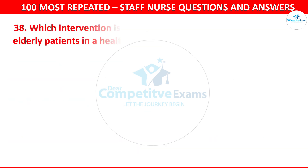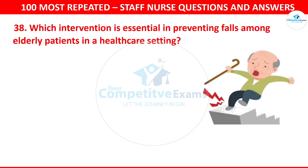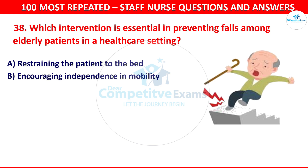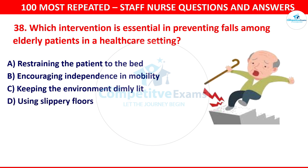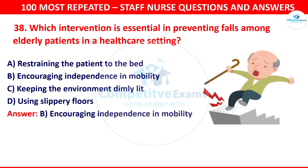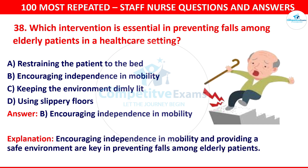Question number 38: Which intervention is essential in preventing falls among elderly patients in a healthcare setting? Options are restraining the patients to the bed, encouraging independence in mobility, keeping the environment dimly lit, or using slippery floors. The correct answer is encouraging independence in mobility. Encouraging independence in mobility and providing a safe environment are key in preventing falls among elderly patients.